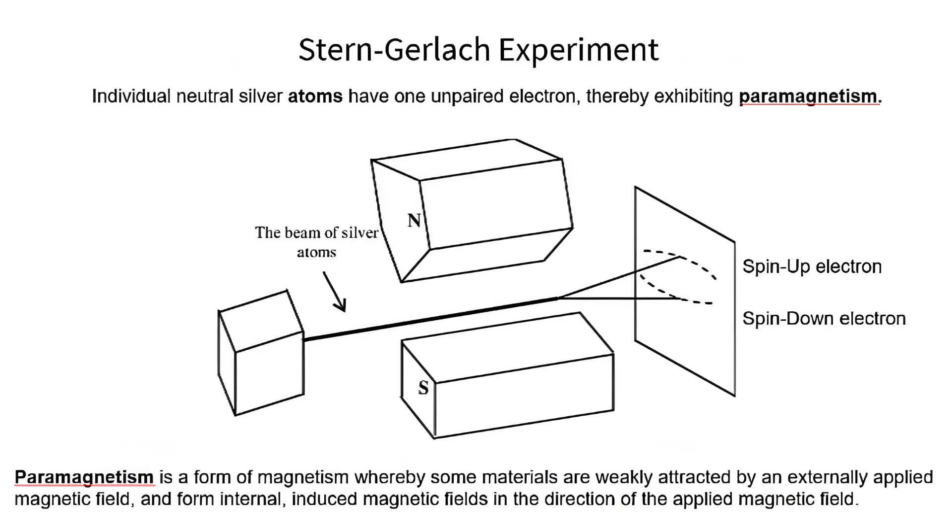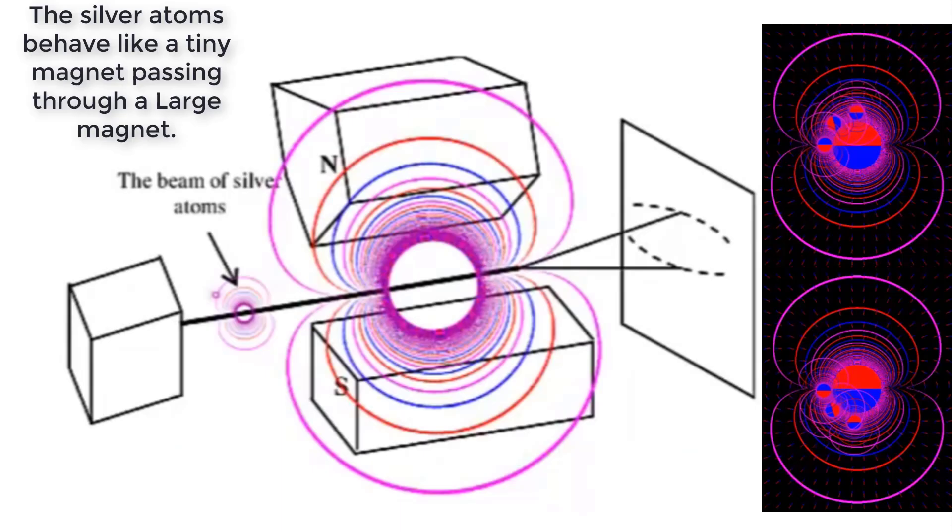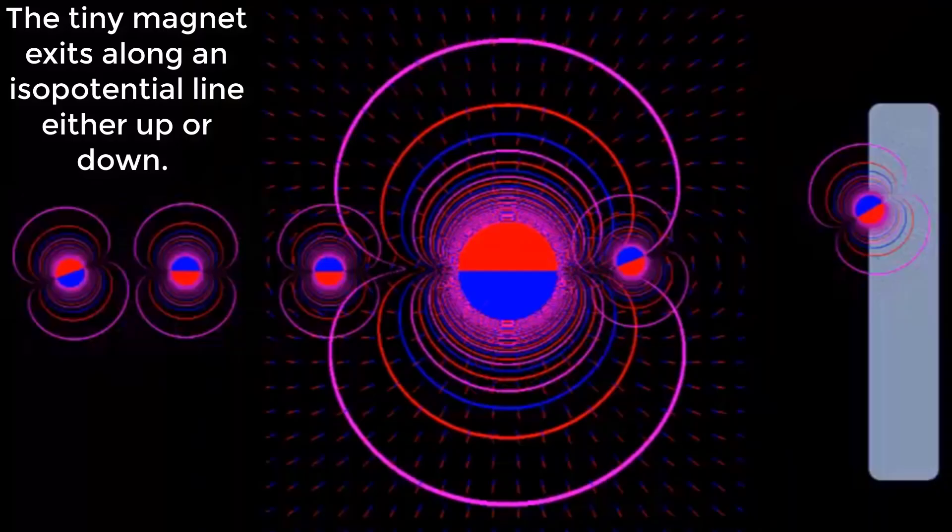The mainstream explanation is the silver atom's unpaired electron is either spin up or spin down. From the perspective of magnetic isopotential lines the silver atoms behave like a tiny magnet passing through a large magnet. The tiny magnet exits along an isopotential line either up or down.